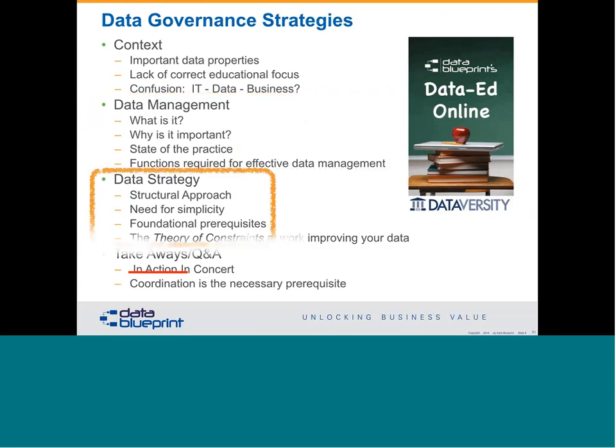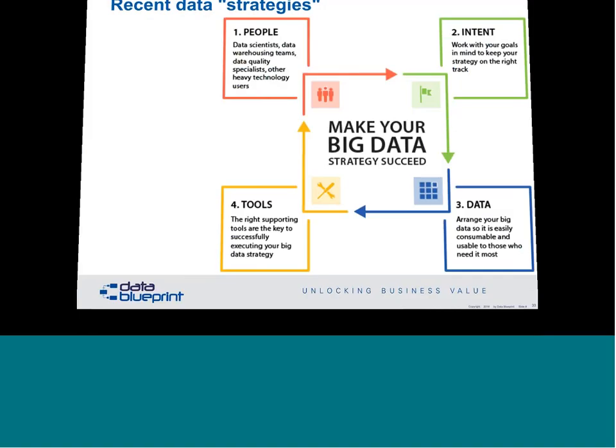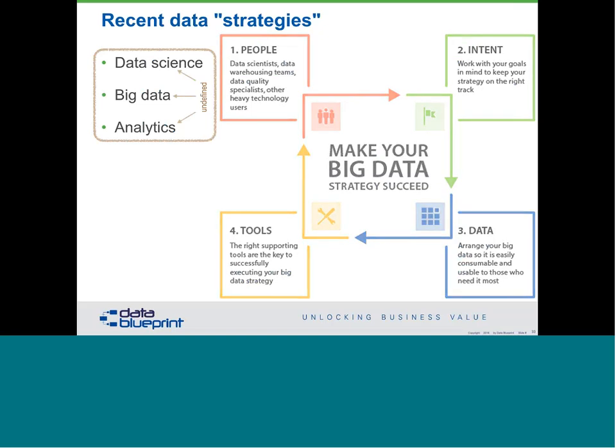Now let's talk about data strategy. The top three pieces of data strategy I get are: we're going to do data science, we're going to do big data, or we're going to do analytics. The problem is those three terms are undefined. Data science is a vacuous term — Eric Siegel, credited with inventing it, said calling somebody a data scientist is like calling somebody a book librarian. Calling something big data is ridiculous. And nobody knows what the word analytics means — it means data analysis. So if your strategy is to do data analysis, I wonder what you were doing before.